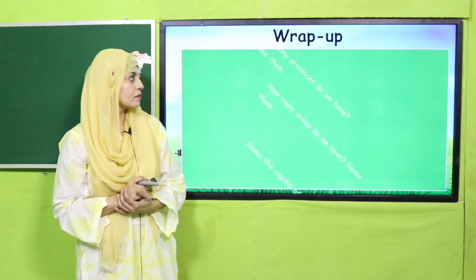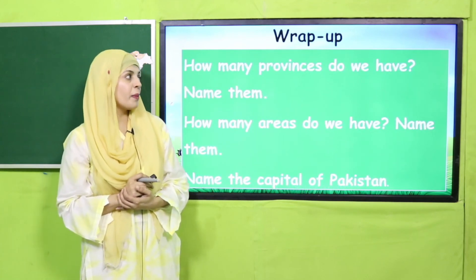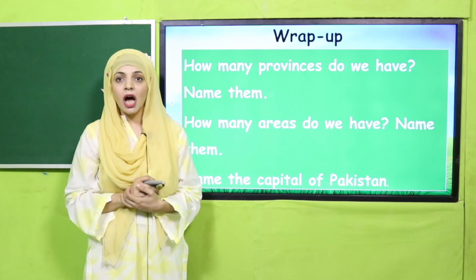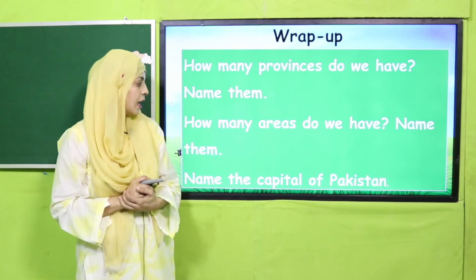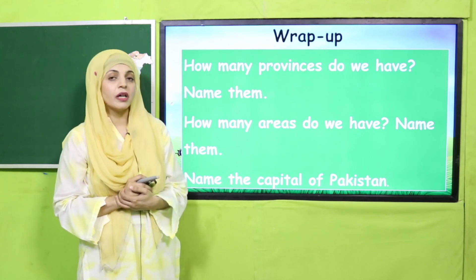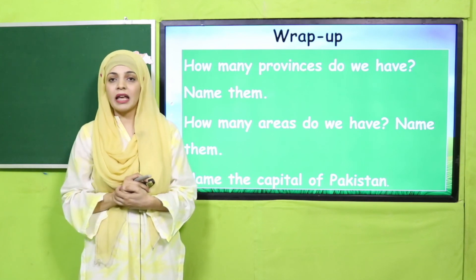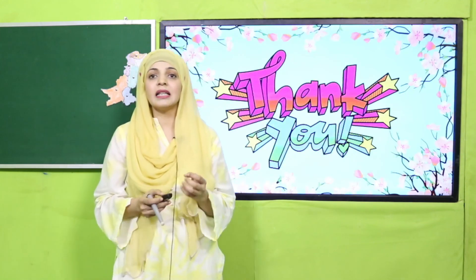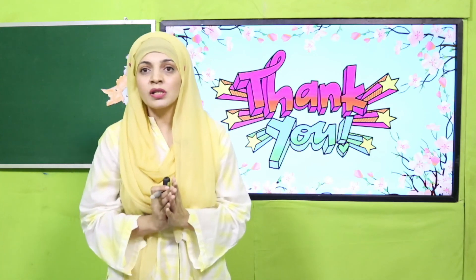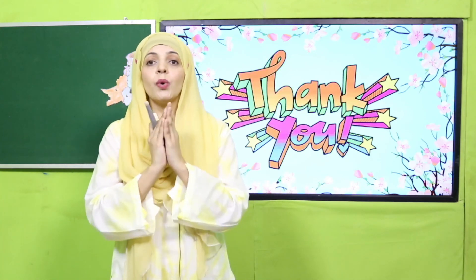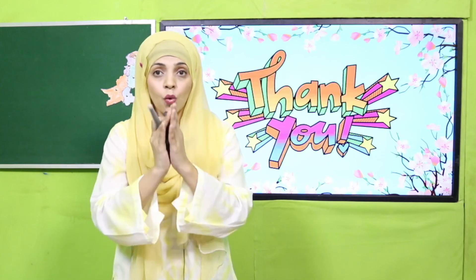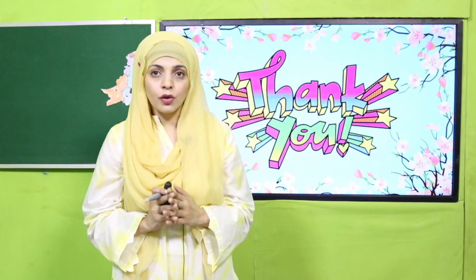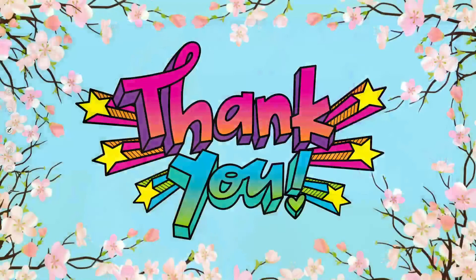Let's wrap up the lesson. How many provinces do we have? We have four provinces: Punjab, Balochistan, Khyber Pakhtunkhwa, and Sindh. How many areas do we have? We have two areas: Azad Jammu and Kashmir and Gilgit Baltistan. The capital of Pakistan is Islamabad. Complete project number two at your homes with the help of your parents, keep everyone around you safe, take care of yourself, have a good day, and Allah Hafiz.